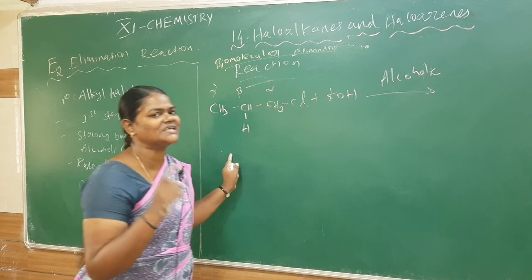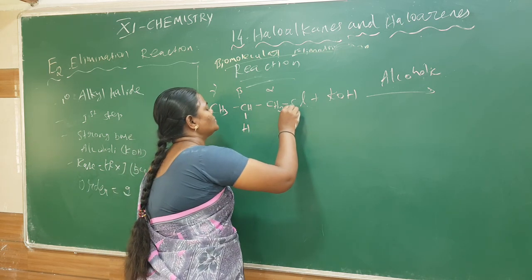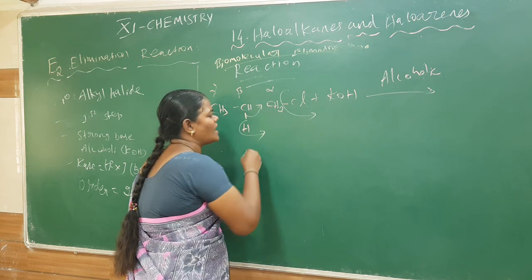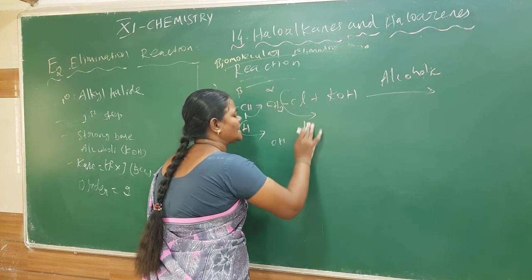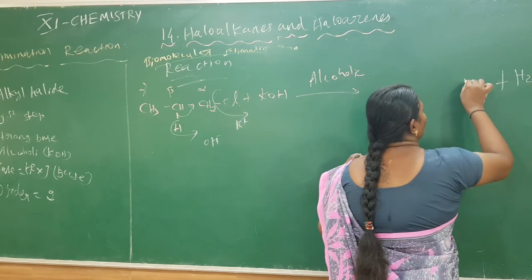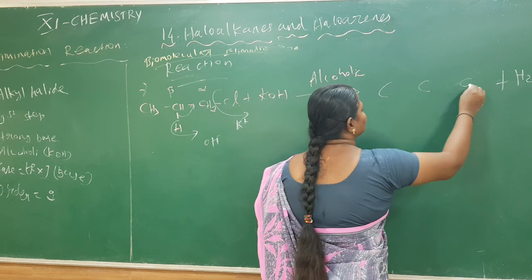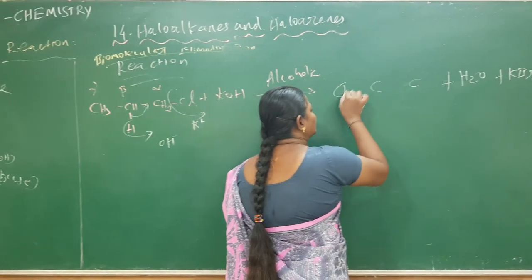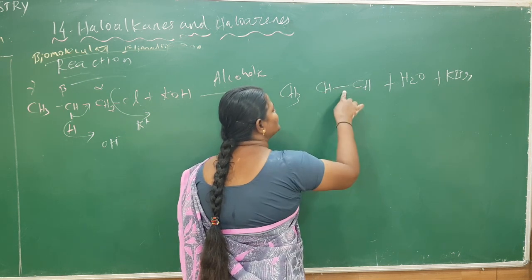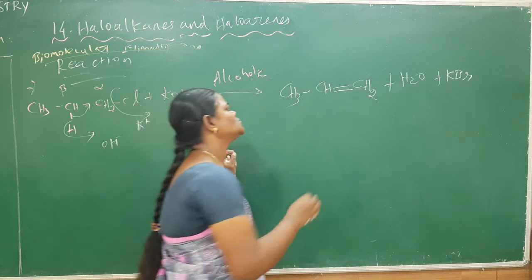Elimination means something is removed. What is happening here: this chlorine will be removed, taking the pair of electrons with it. The electron will be shifted, the hydrogen will be lost, and the OH separates. OH minus reacts, it will form H2O, and the remaining will be KCl. The remaining product has 3 carbons; this bond will be shifted here to form a double bond. So the name of the compound is 1-propene — 3 carbons means the root word is prop, and the double bond is present between the first and second carbon, so we number it as 1-propene.